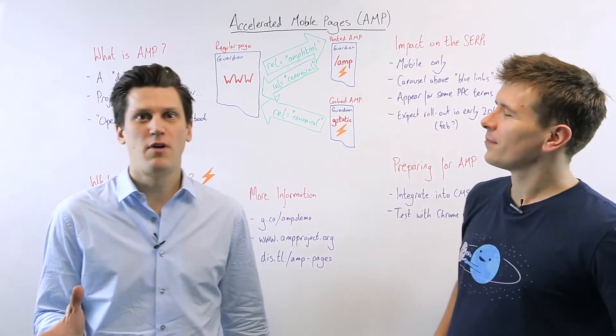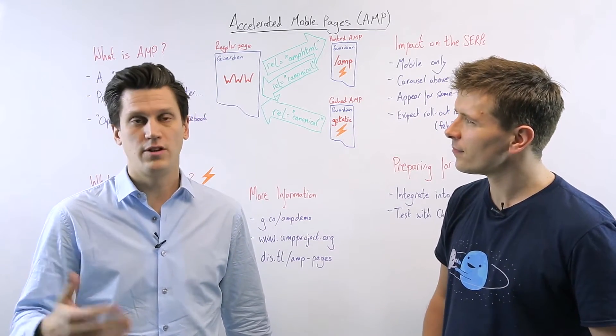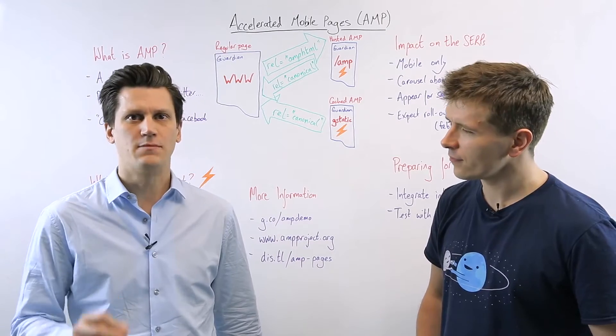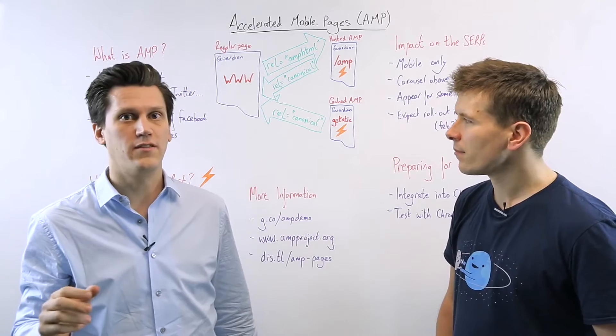I'm glad you asked Tom. So an accelerated mobile page, or AMP for short, is a project from Google and Twitter designed to make really fast mobile pages. At its essence, it's basically a stripped down form of HTML, a diet HTML if you will.